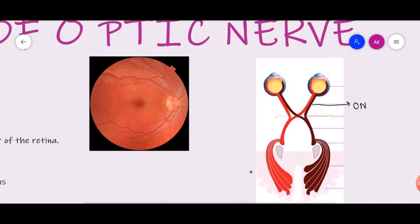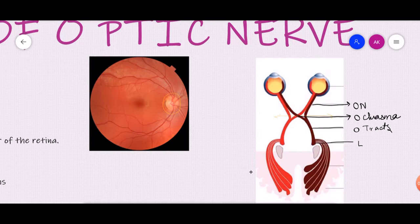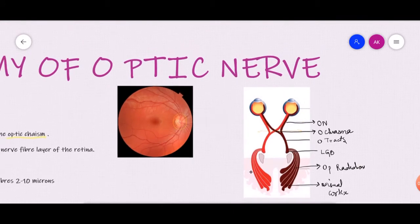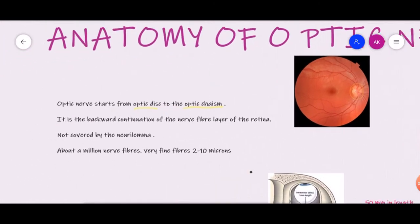The optic nerves of both sides will coalesce together and form the optic chiasma. From the optic chiasma, we have the optic tracts. Then we have the lateral geniculate body, and finally we have the optic radiations, which are ending in the visual cortex. So this is a very basic overview of the components of the visual pathway. In this lecture, I will be telling you about the anatomy of the optic nerve — from the optic disc going up to the optic chiasm.